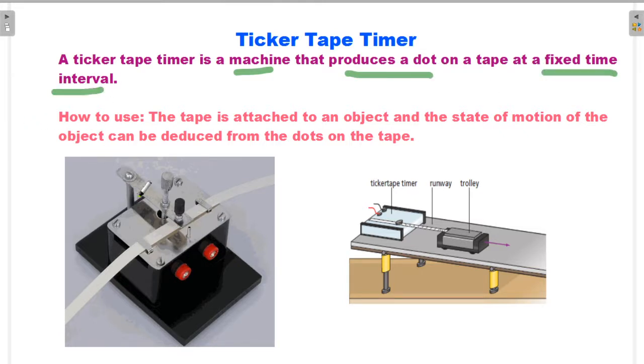In the real picture, we insert the ticker tape timer on a runway. This is the trolley. When the trolley moves, the ticker tape timer produces dots on the tape.